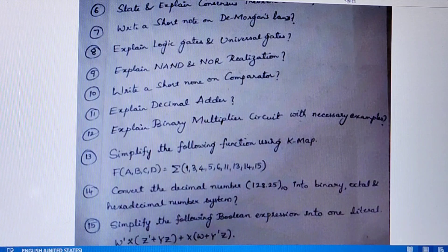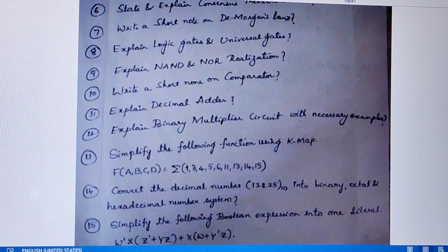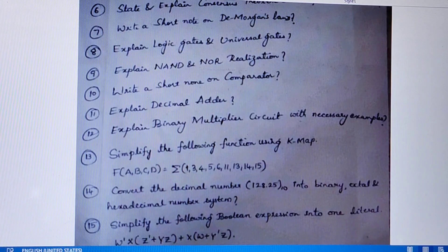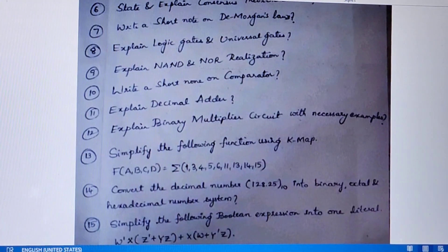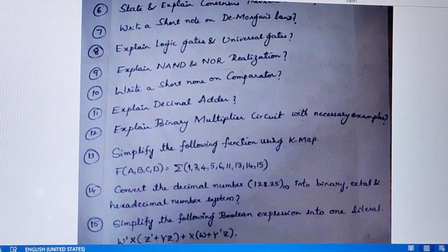Fourteenth question is convert the decimal number 128.25 into binary, octal, and hexadecimal number systems. We have discussed all the number base conversions in class. I gave this as a sample question — you have to practice all types of number base conversions. Next question is simplify the following Boolean expression into one literal: W'XZ' + YZ + X(W + Y'Z).